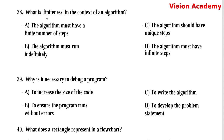Question number 38: What is finiteness in the context of an algorithm? Option A, the algorithm must have a finite number of steps. Option B, the algorithm must run indefinitely. Option C, the algorithm should have unique steps. Option D, the algorithm must have infinite steps. Here, option A, the algorithm must have a finite number of steps, is the right answer.